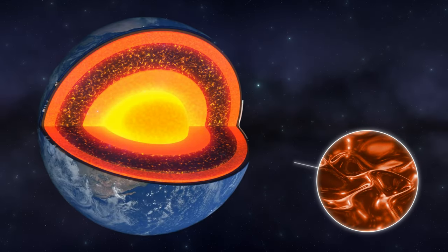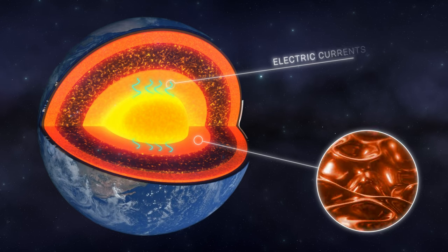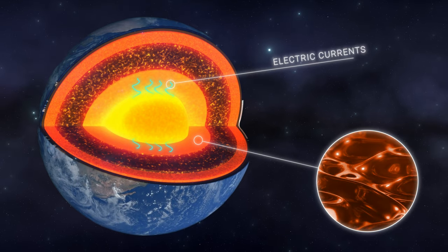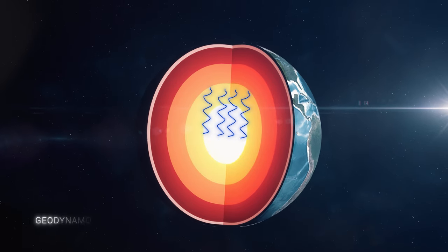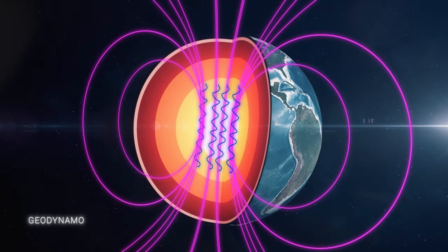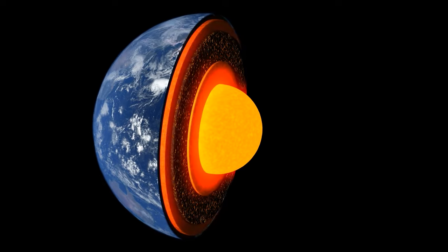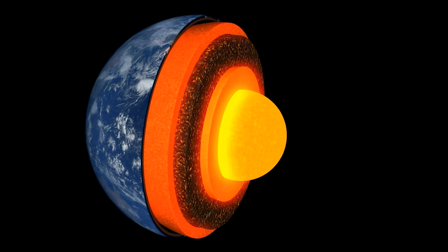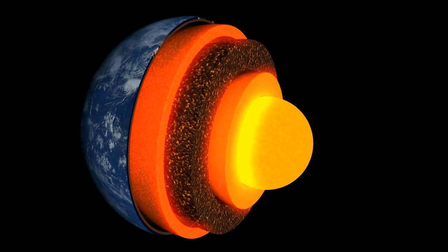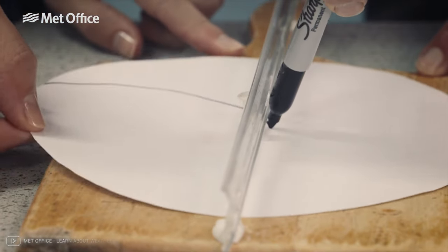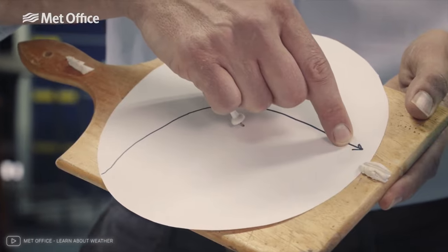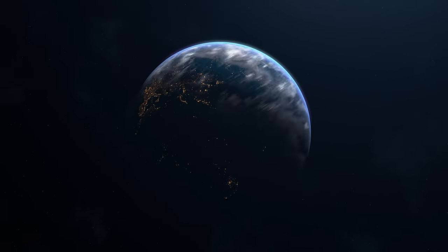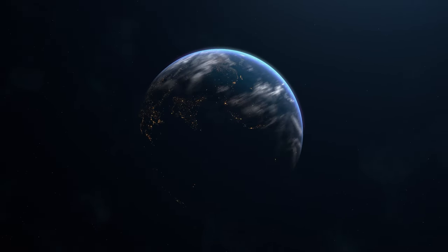The movement of liquid metal generates electric currents, which in turn create magnetic fields. This process, known as geodynamo, is the driving force behind Earth's magnetic field. The dynamics of the outer core are complex and not fully understood. However, scientists believe that the Coriolis effect, a consequence of the Earth's rotation, plays a decisive role in the configuration of the magnetic field.